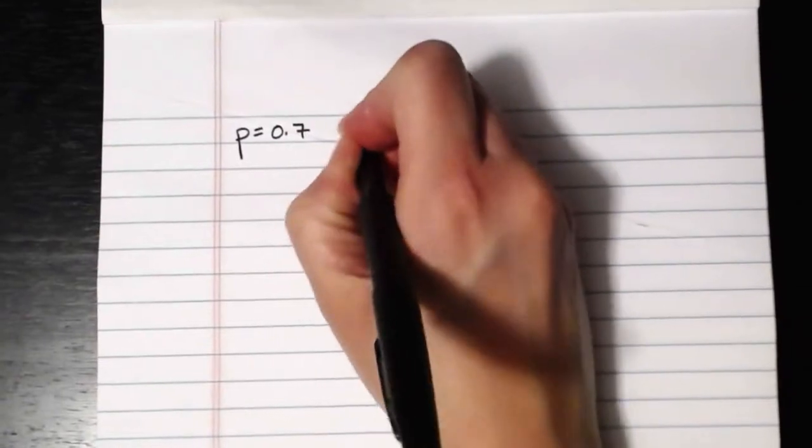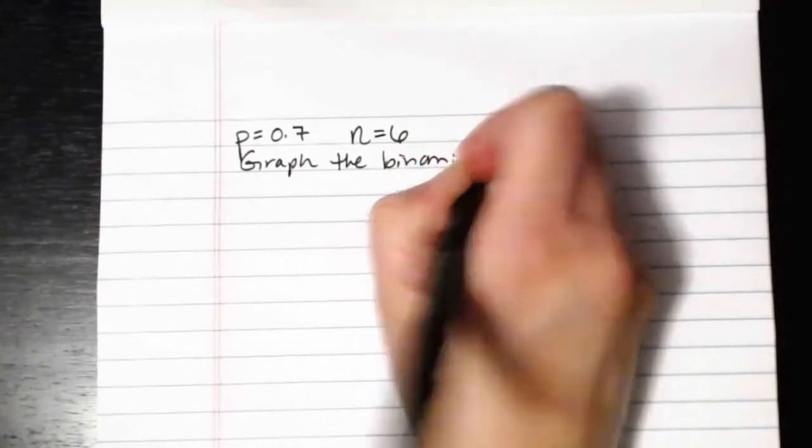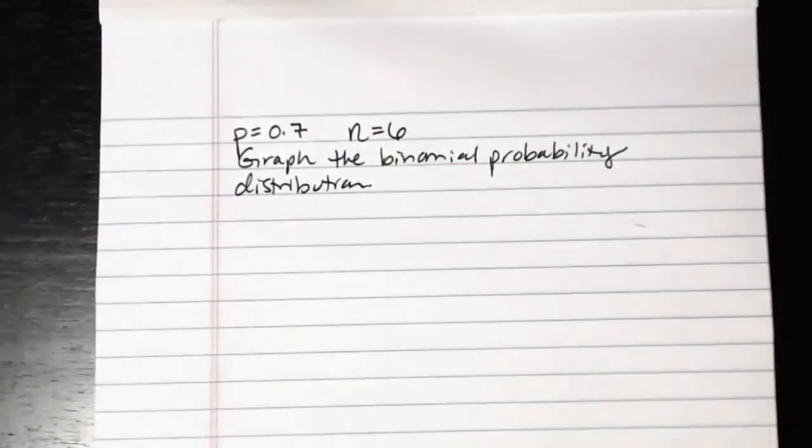First I'm going to grab us a scenario. This is an example where we know that the probability that somebody dining by themselves is going to leave a tip is 0.7, so there is a 70% chance that somebody who's eating dinner at a restaurant all by themselves is actually going to leave a tip for the wait staff. After we know that, we also need to know the number of trials. At this point let's say that there are six people in the restaurant who are dining by themselves. So we know 70% chance of success, there's six people dining, and we want to graph the binomial probability distribution for this scenario.